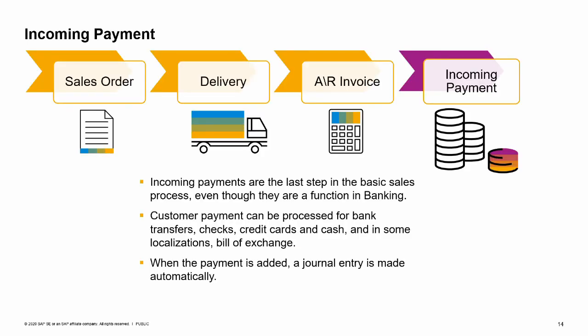Incoming payments are the last step in the basic sales process, even though they are a function in the banking module. Posting an incoming payment receives the payment from the customer. Customer payments can be processed for bank transfers, checks, credit cards and cash, and in some localizations, bill of exchange. When the incoming payment is added, a journal entry is made crediting the customer account for the payment. Depending on the payment means, an appropriate GL account such as one of our bank accounts is debited. If there is an early payment discount, a debit is applied to a discount account. When you create an incoming payment to clear, fully or partially, a document or transaction, internal reconciliation takes place automatically, meaning that the customer's invoice and the payment are matched in the system. Additionally, the payment wizard can be used to process incoming as well as outgoing payments. Payments can also be received automatically from a bank transfer using bank transfer processing in many localizations.